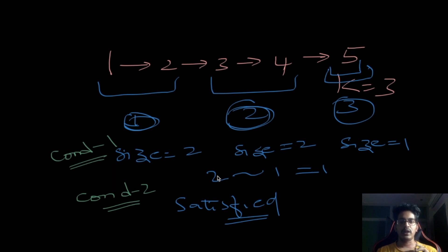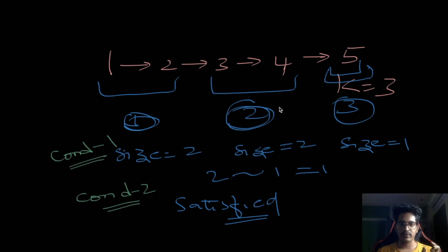Now condition two: the greater element should come first. We split like 1,2 and 3,4 — and 5 is the smaller element coming after the greater ones. So the second condition is also satisfied. That's the basic problem statement.